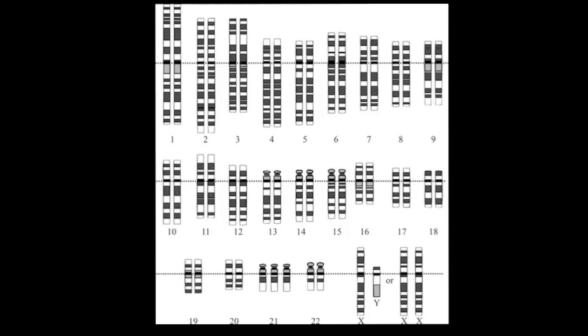In this second karyotype we can see that chromosome number 21 has three copies, known as trisomy 21. This results in Down syndrome and shows us that non-disjunction has occurred on chromosome number 21.